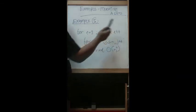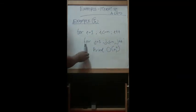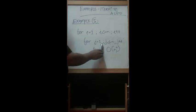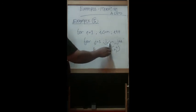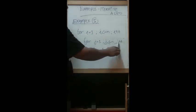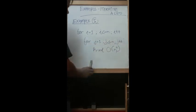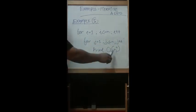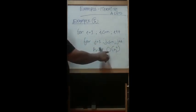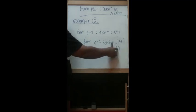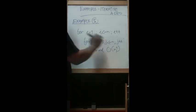For the inner loop, the second loop: j equal to one, j less than or equal to n, j plus plus — also increasing by one. So basically, this algorithm will end up with O(n squared).